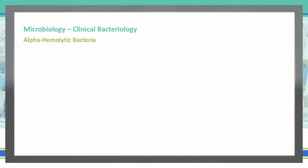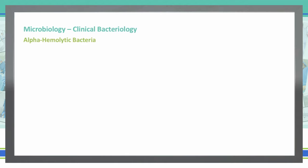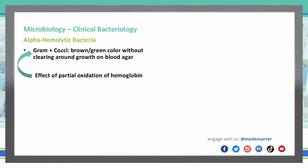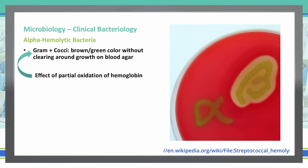Some bacteria are alpha hemolytic. Alpha hemolytic refers to the ability of bacterial colonies to induce hemolysis when grown on a blood agar plate. Gram-positive cocci will show a brown or green color without clearing around growth on the blood agar, due to partially hemolyzing the plate — a partial oxidation of hemoglobin causing that color change. As you can see in this picture, they've drawn the alpha on a blood agar plate, showing that brown-green color only where the bacteria is present.